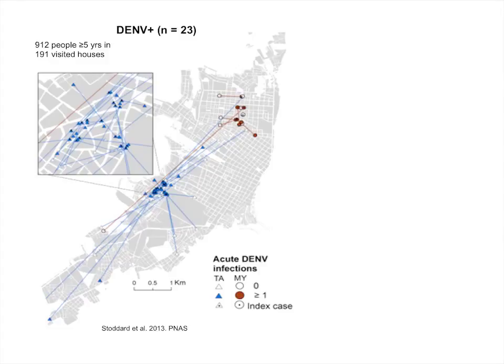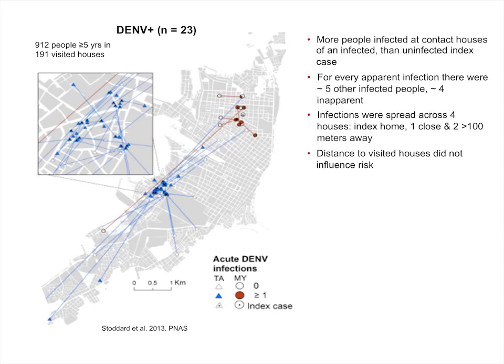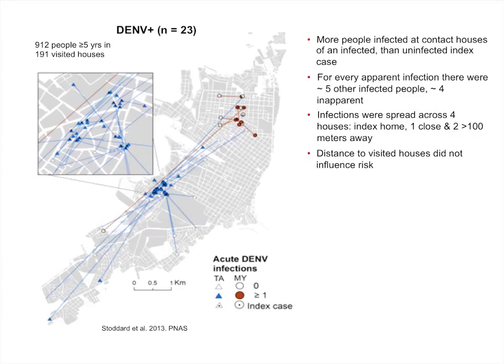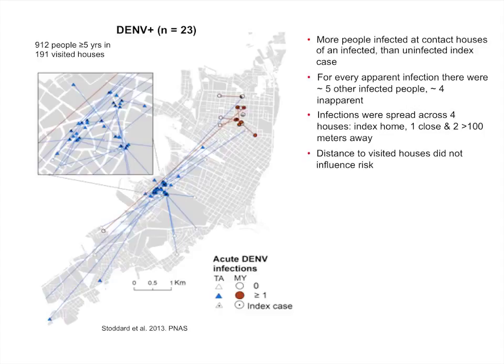This figure gives you a sense of how people travel. These people are really quite poor, but they move a lot. These are the two neighborhoods we studied — the red and the blue — and you can see they moved around within their neighborhoods, but in some cases went four or five kilometers away. We saw that more people were infected in contact cluster houses. For every apparent infection — somebody sick who would seek a doctor — there were approximately five other infected people. We never would have known they were out there if we hadn't been doing this. They weren't sick. Infections spread across four houses: one was the index person's house, one was a nearby neighbor, and the other two were beyond 100 meters — potentially kilometers away.